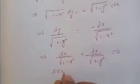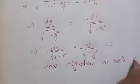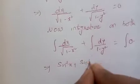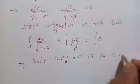Now integrating on both sides: ∫ dx / √(1 - x²) + ∫ dy / √(1 - y²) = 0. Applying the standard formula, ∫ dx / √(1 - x²) = sin⁻¹(x), so sin⁻¹(x) + sin⁻¹(y) = c, which is the general solution of the given differential equation.